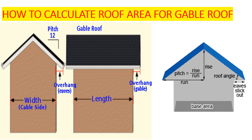We want to look at the roof area for a gable roof. In this gable roof, we have the length and the width — the width of the house and the length of the house. Those are the dimensions we are going to use to get the roof area. We will also incorporate the eaves on the width side and the length side for the overhang on the gable side. We take the base area — the length and the width — to get the roof area.